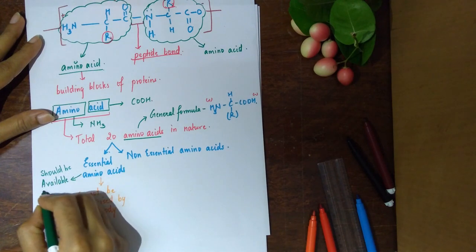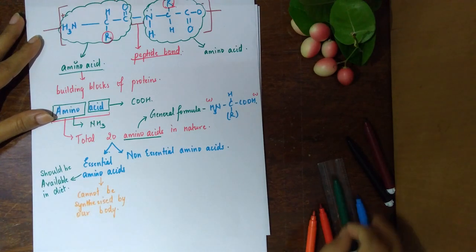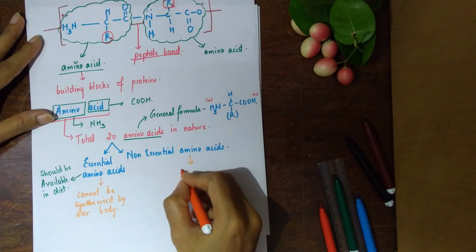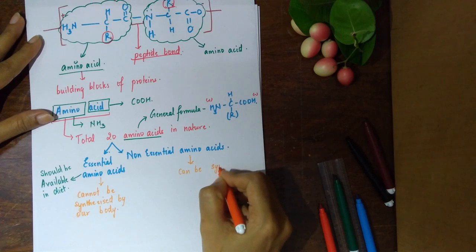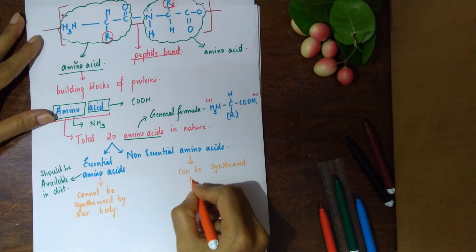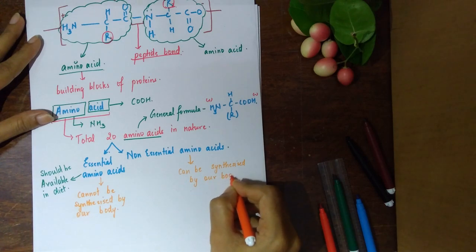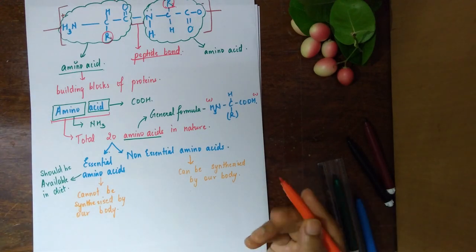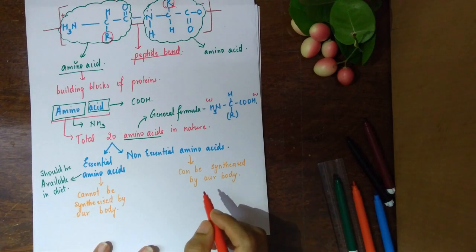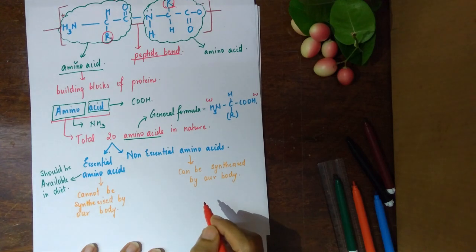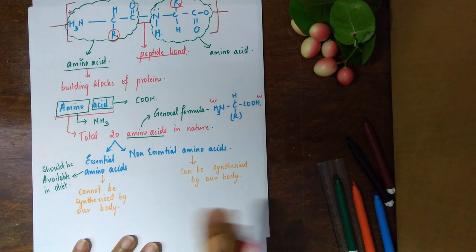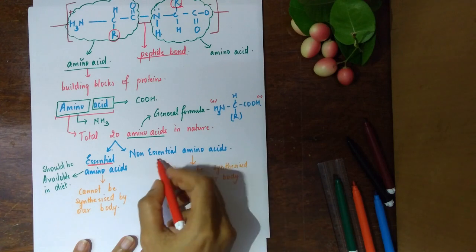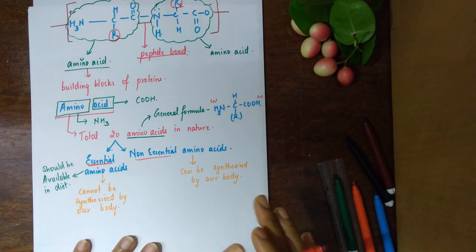Non-essential amino acids are those which can be synthesized by our body. Our body can make a few compounds according to its requirement and need. So essential ones are those which our body cannot make and we require them from dietary sources, whereas non-essential ones can be synthesized by our body.